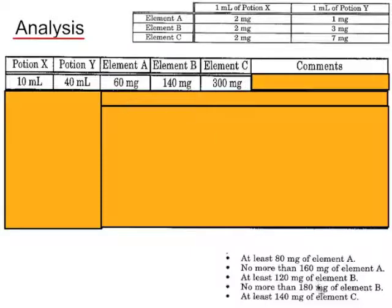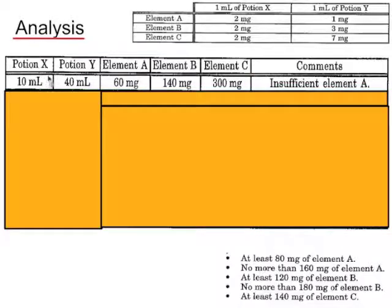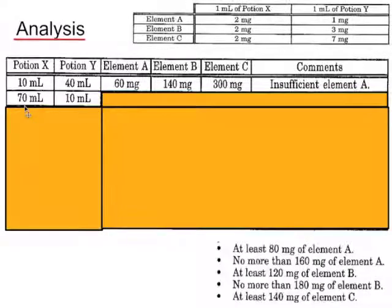Now remember we need to abide by these restrictions. The first one says that we need at least 80mg of element A, but with this combination we have only 60mg. So this combination of 10ml of potion X and 40ml of potion Y does not meet the criteria due to insufficient amounts of element A.